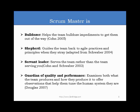He is a shepherd — when the team strays from Agile or Scrum practices, he has a responsibility to bring them back. He is a servant leader — he leads the team by serving them rather than directing, controlling, or telling them what to do. He manages and motivates the team by way of serving them. He is a guardian of quality and performance. We spoke about extrinsic and intrinsic quality — the Scrum Master not only looks at what the team is producing, but also at how they are producing it.